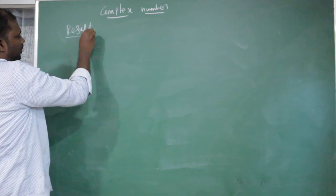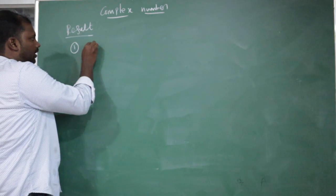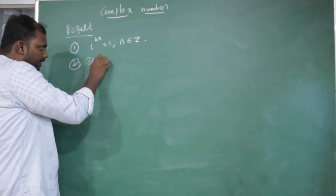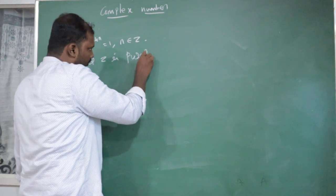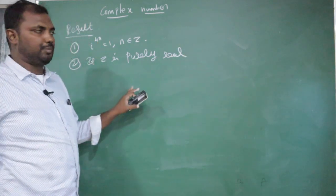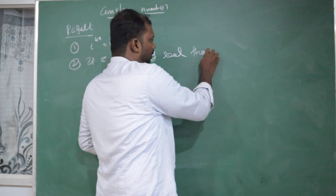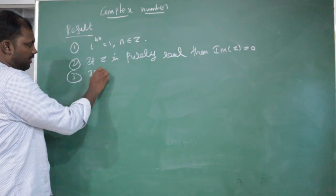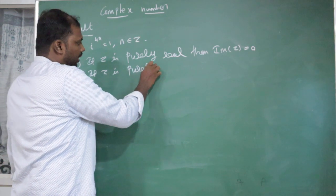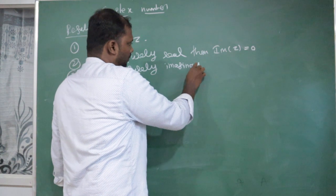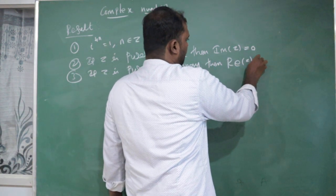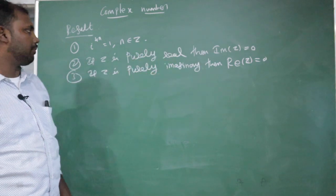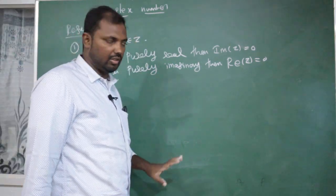Key results: First, i to the power 4n equals 1, where n belongs to integers. Second, if Z is purely real, then the imaginary part of Z equals 0. Third, if Z is purely imaginary, then the real part of Z equals 0. These results are to be applied when solving problems.